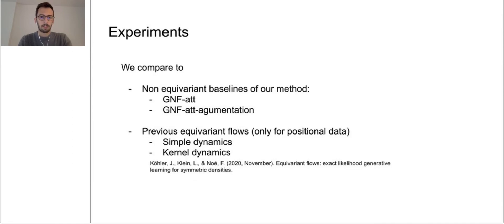In the performed experiments, we compare our method to non-equivariant variations of our model with and without data augmentation, where data augmentation means translating and rotating the training samples. And we also compare to previous E(n) equivariant flows, which only worked for positional data x but not with feature information h.